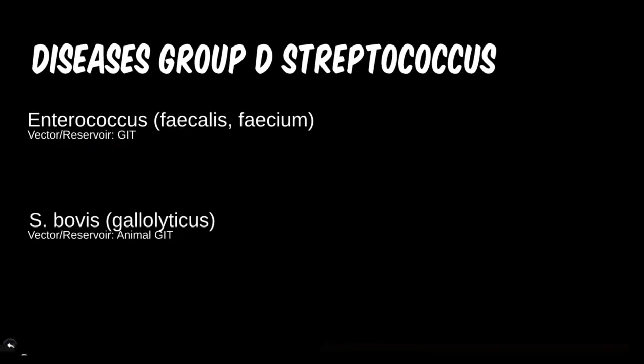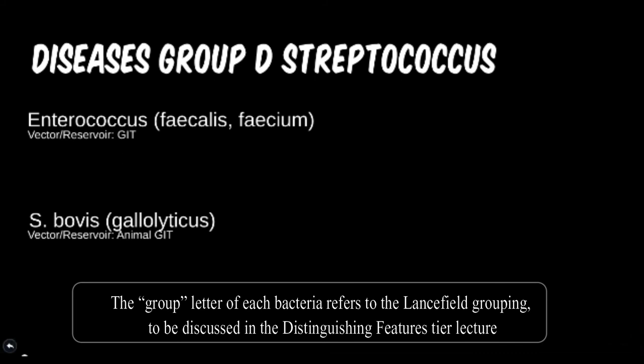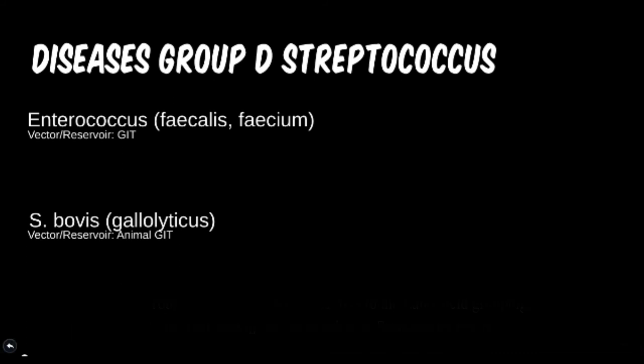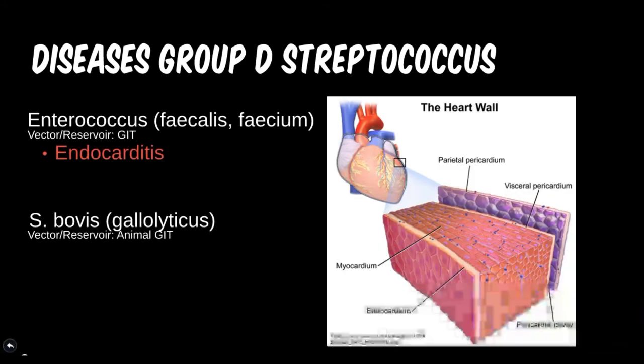The last group to discuss in the gram-positive cocci is Group D strep, or enterococcus. Enterococcus is normal flora in the human gastrointestinal tract. Like most bacteria in our guts, they keep each other balanced until something throws them out of whack. In particular, enterococcus can be a concern if there is a penetrating wound such as a stab wound or a gunshot to the abdomen. And yes, enterococcus is yet another organism on the list that can cause endocarditis.